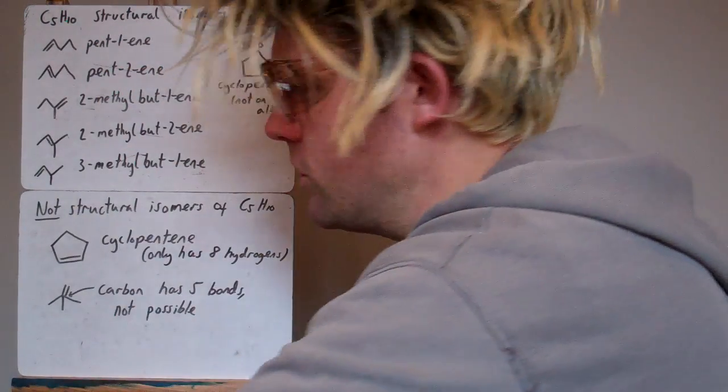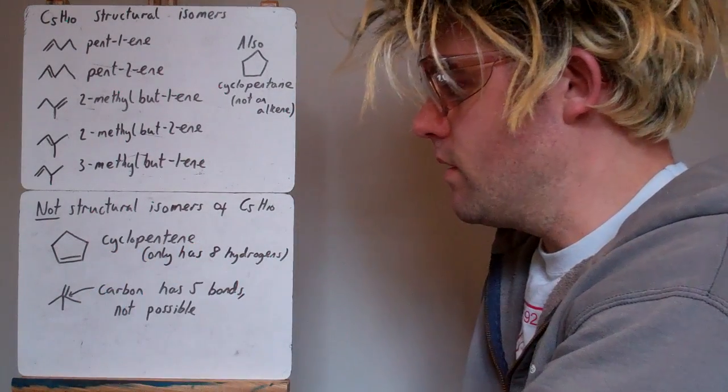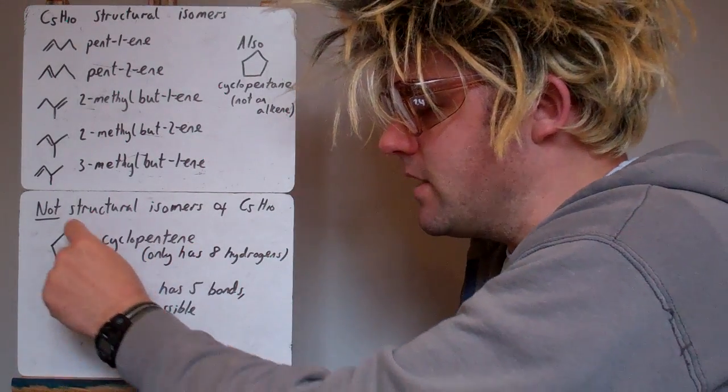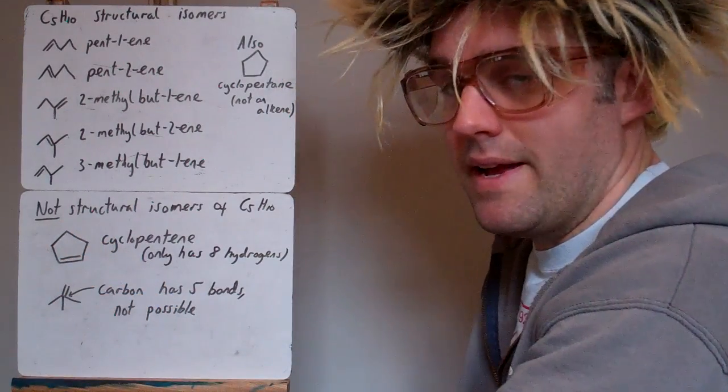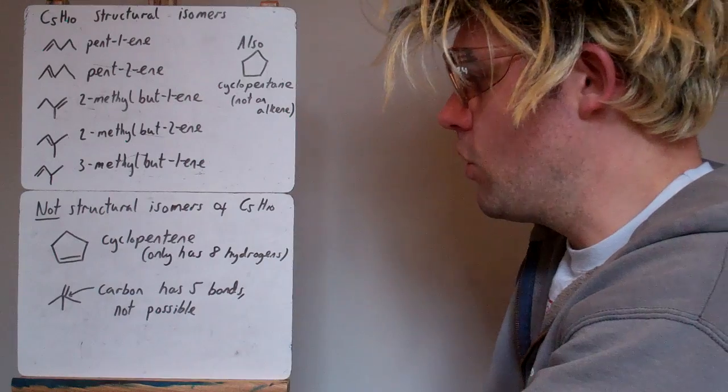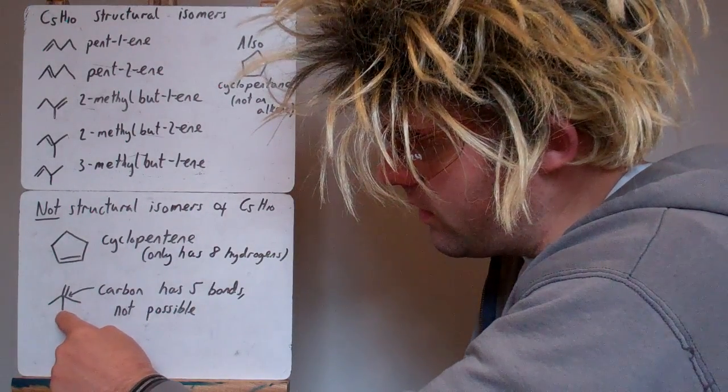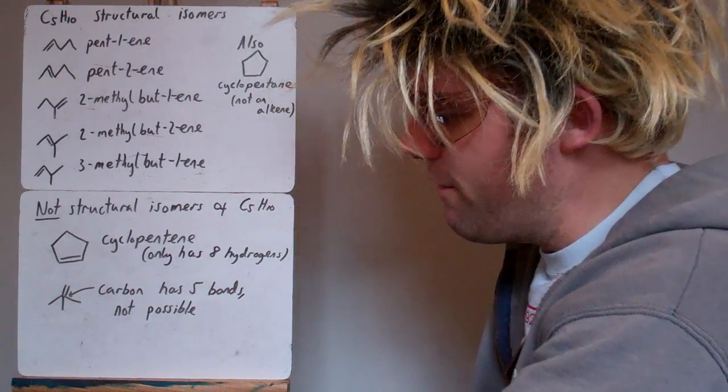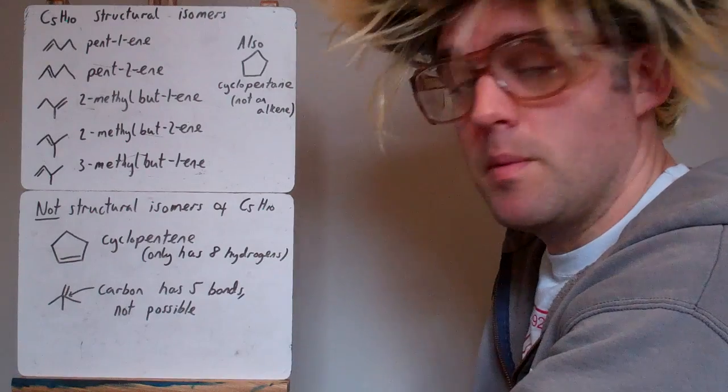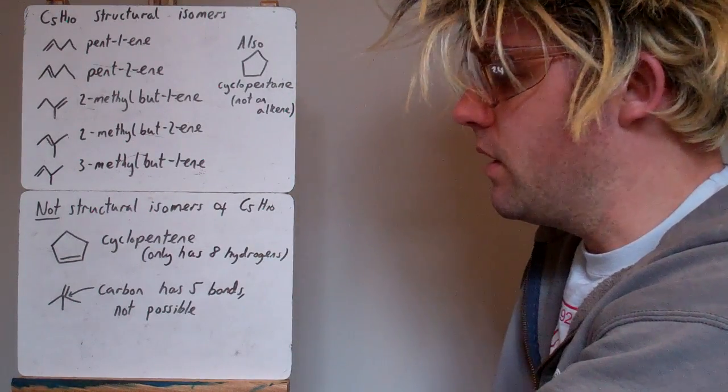Things that are not structural isomers are these ones, cyclopentene. This only has eight hydrogens, two, four, six, and then one there, one there, so eight hydrogens. So it's not got the same molecular formula. Also, this one here, I think two methyl groups coming off here and a double bond there. That carbon would have to have five bonds for that to be possible, and that's not possible if you can't have five bonds to a carbon like that, so that wouldn't be one either.